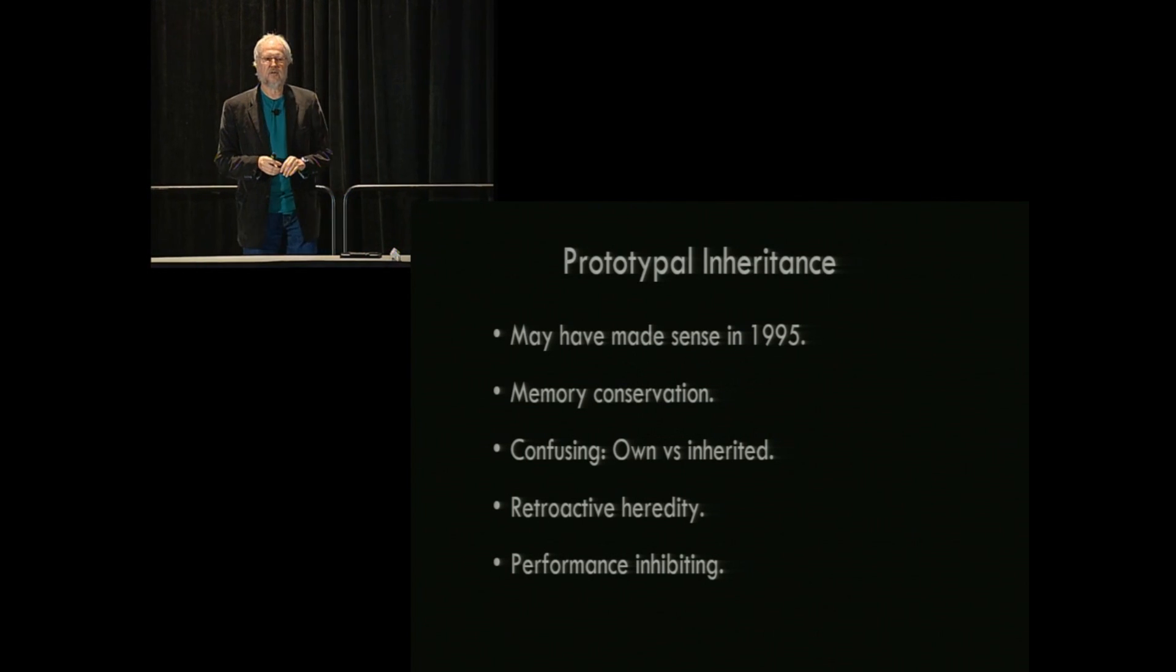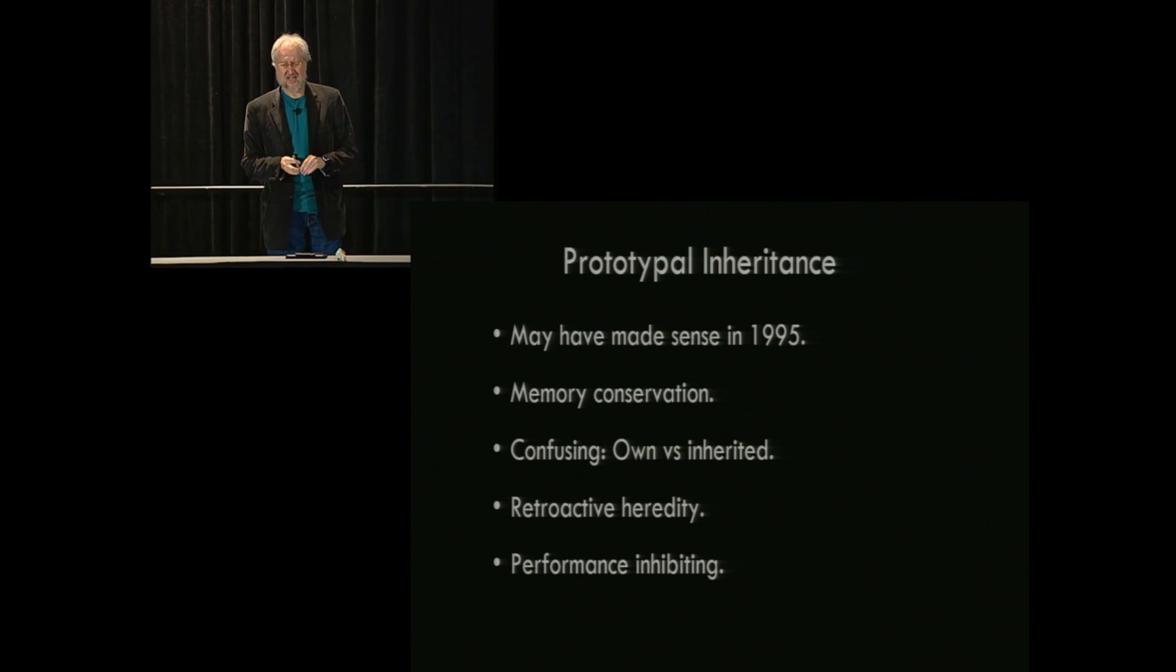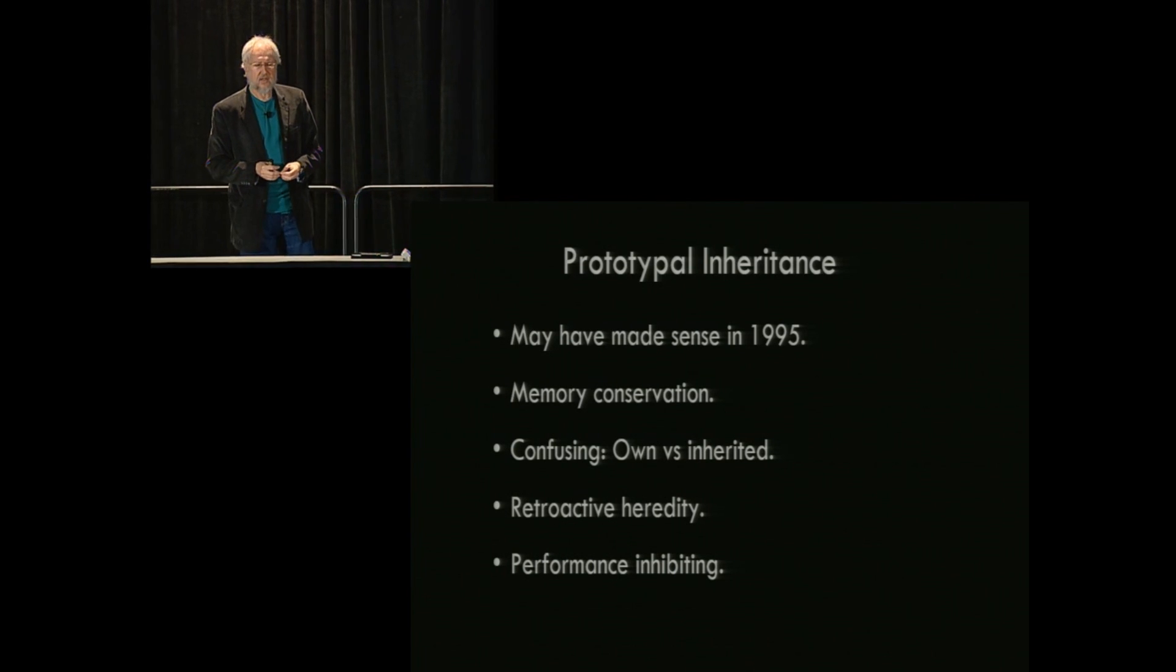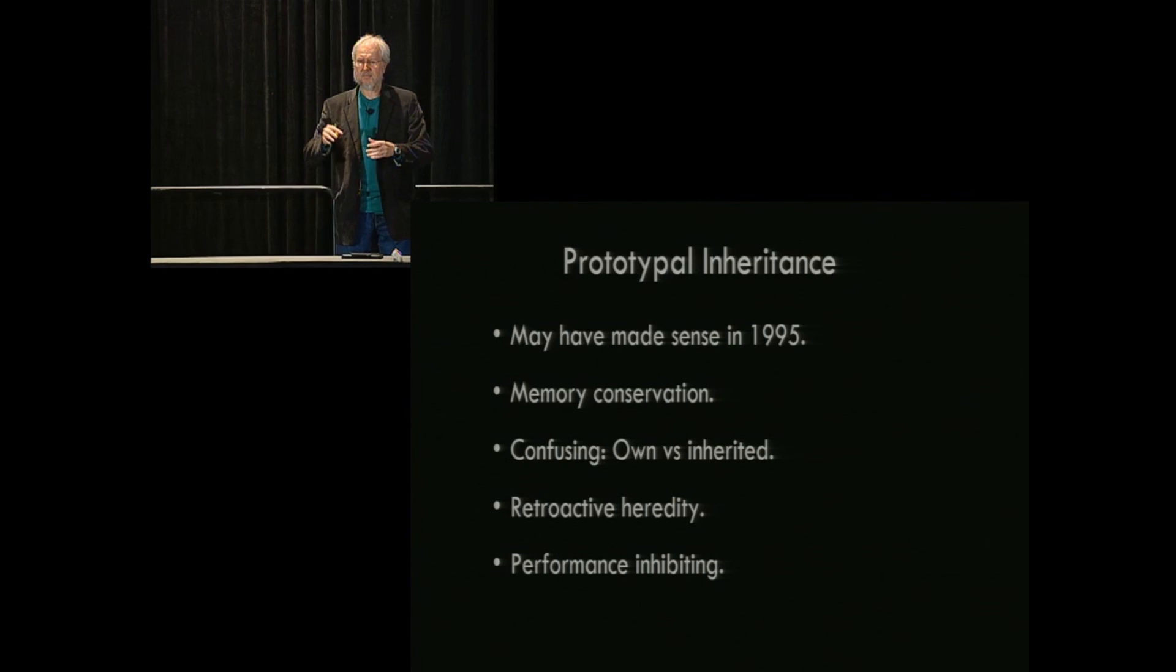So it turns out, and I was surprised to learn this recently, that prototypal inheritance was actually not a good idea either. It may have made sense in 1995 when JavaScript first came out. It made sense because of memory conservation, that if you have lots of objects, they can all inherit from the same object, and therefore you don't have to replicate all the methods. But that's not true anymore. We now have gigabyte memories, so that memory conservation is no longer valuable. On the negative side, there's confusion about what an object actually is. Is the object its own properties, or is it the own properties plus the inherited properties? Sometimes it doesn't matter. Sometimes it matters a lot. And being unclear as to what the actual composition of the thing is does cause problems, does cause bugs.